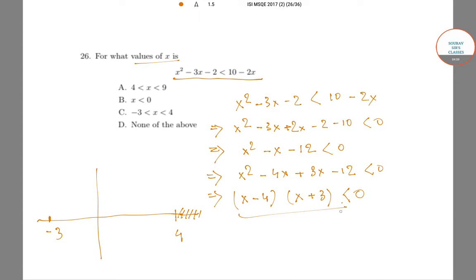Now if x lies to the right of 4, x - 4 and x + 3 both are positive and this expression is positive. If it lies to the left of -3, then x - 4 and x + 3 both are negative and so this expression is positive. So we have that x has to lie in this part.